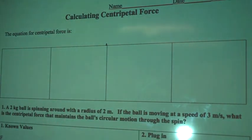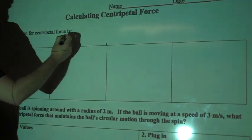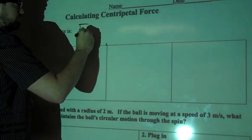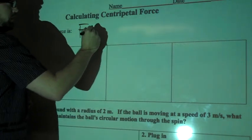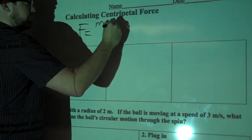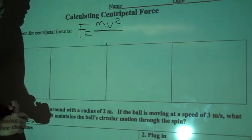Calculating centripetal force. The equation for centripetal force is F equals mv squared over r.